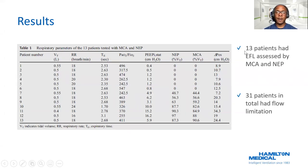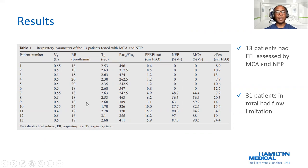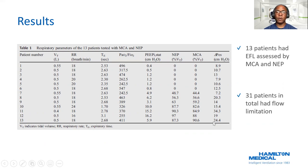13 patients had both techniques done — not all 44. These are the comparisons of patients who had both techniques performed. The first six patients were not flow limited, with no significant intrinsic PEEP and relatively low esophageal pressures, except for one patient at 7.2. The remaining seven patients were flow limited, with significantly higher esophageal pressures, all had expiratory flow limitation, and all had significant intrinsic PEEP compared to the non-flow-limited patients.